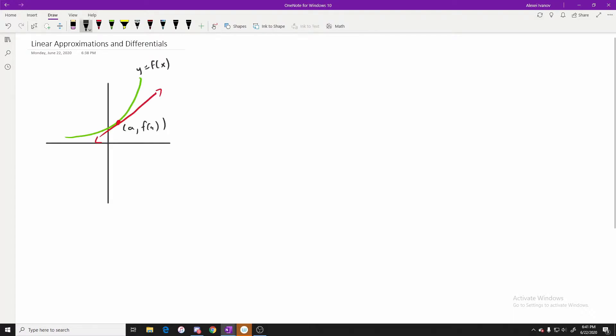A couple of lessons ago we talked about tangents and tangents at a point at a curve. Now linear approximations are kind of an extension of that, and essentially what we try to do is approximate a value on the curve through this linear approximation. One thing to notice about linear approximations is that it is very good at the point itself, however the approximation gets really bad the further we move away from this point.